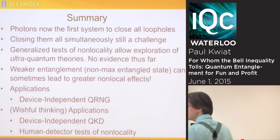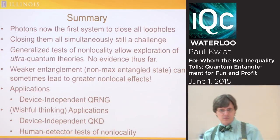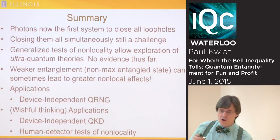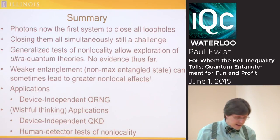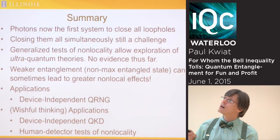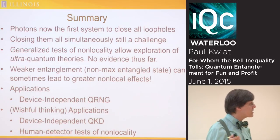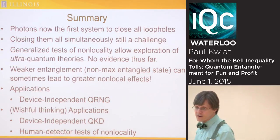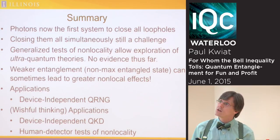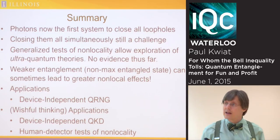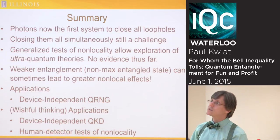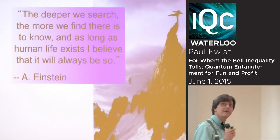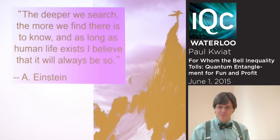In summary: photons are now the only physical system to have closed all the loopholes independently, though closing them all simultaneously is still a challenge. We can use generalized tests of non-locality to study ultra-quantum theories like Popescu-Rohrlich boxes, and currently there's no evidence for any ultra-quantum theory. We've seen that weaker entanglement can lead to greater non-local effects, and there are a number of applications and future directions. Thanks very much.